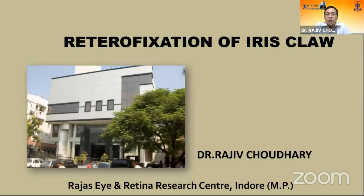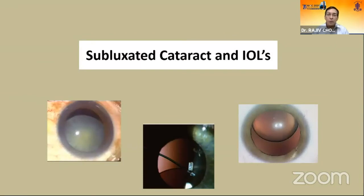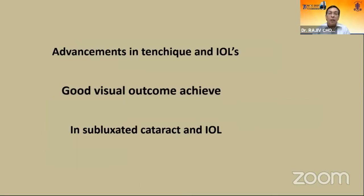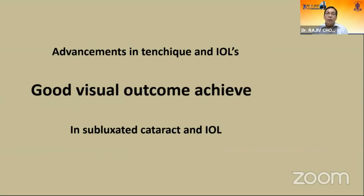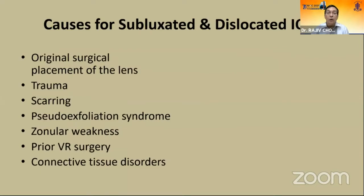On the retrofixation of iris claw lens, it is one of the important lenses and easy to manipulate, especially when there is no capsular support or other option is not available. It is one of the easiest procedures which can be used in subluxed cataract and oil — once you remove the oil — apart from glued IOL and scleral fixated IOL. With advancement in technique and IOLs, good visual outcome is achieved in subluxated cataract and IOL.